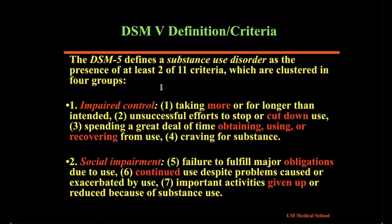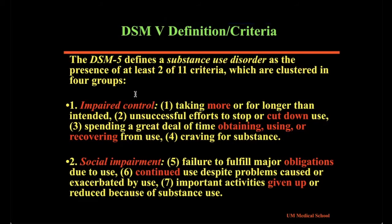The first category is impaired control, which includes four different criteria, including having difficulty cutting down or stopping, as well as other criteria related to the amount of time and effort spent in securing or obtaining the drug or substance. The second category is about social impairment and includes three elements, such as continuing to use despite the various problems the use may cause. Social cost is a salient feature of this category.